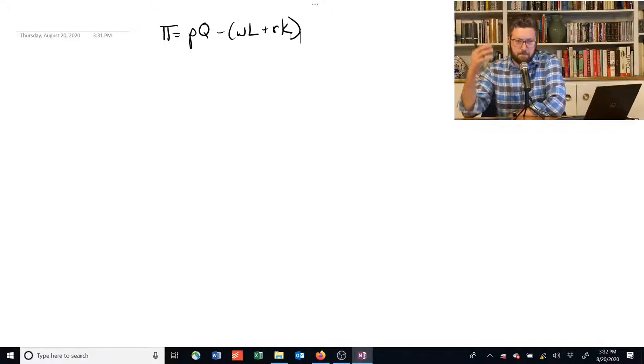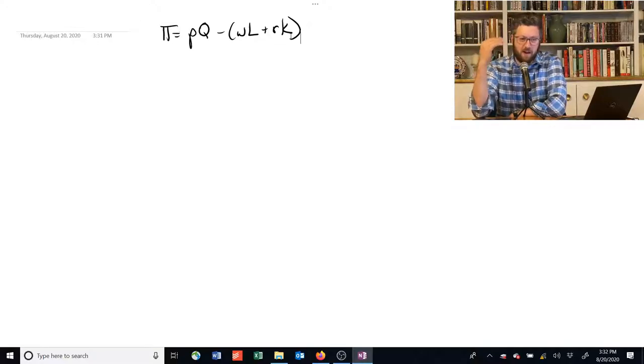So how do we find the profit that a firm is going to get and how do we use that profit maximization assumption to figure out how they're going to use different resources? We've got our profit function over there, revenue minus costs, and we need to add to that a couple other pieces of information that we might have.